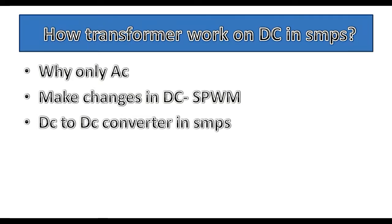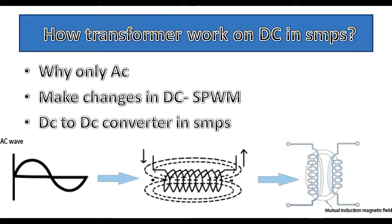So why does a transformer work only on AC? What is the reason? I'm going to explain that. AC is alternating current, which has a variation in current, and so it generates a magnetic field when passing through a coil. The transformer just needs variation in current to produce a magnetic field and to induce EMF in the secondary when input is applied to the primary — as per mutual induction.